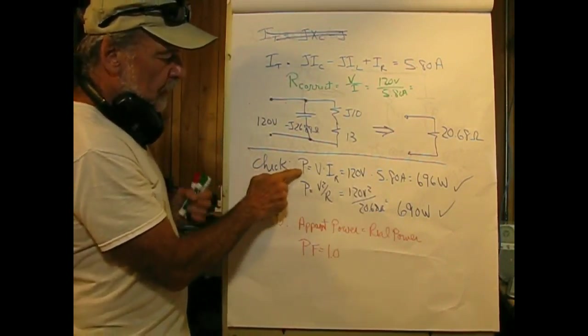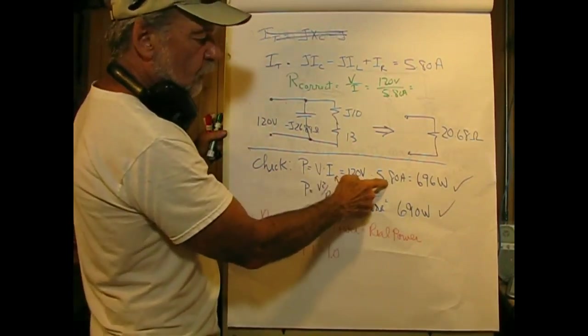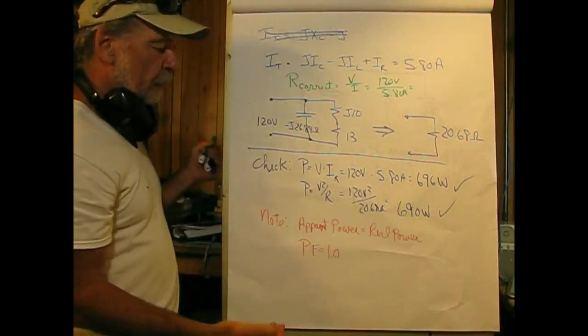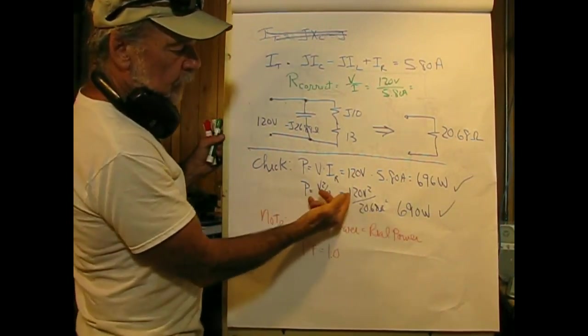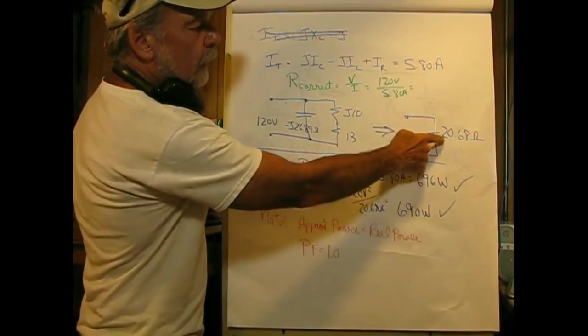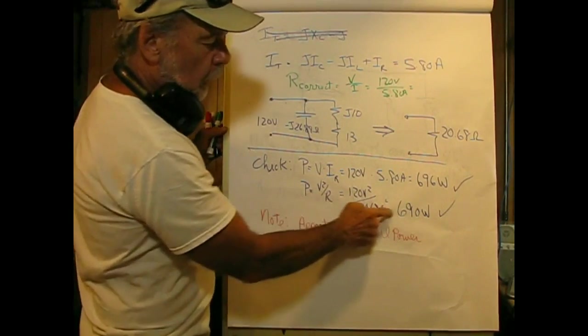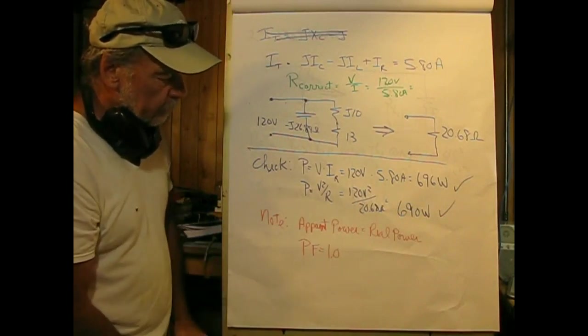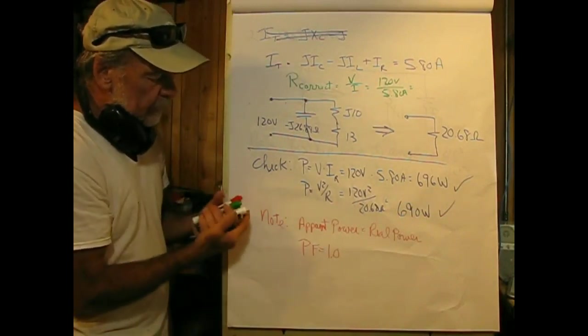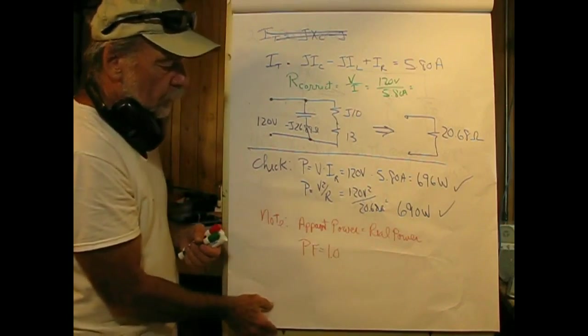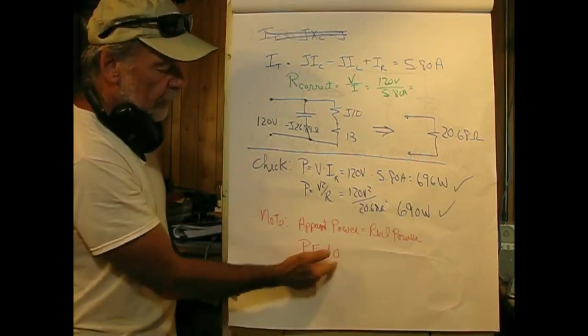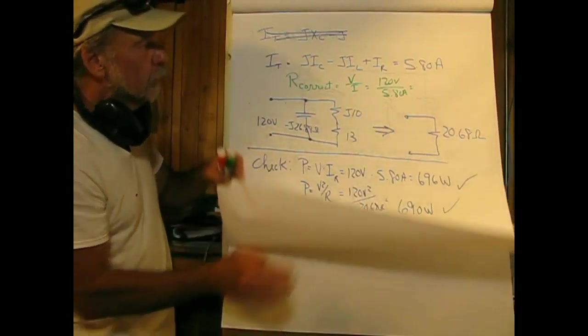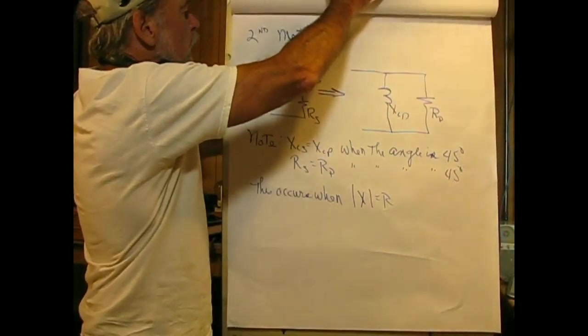If we check this, P equals V times IR, 120 times 5.8 amperes gives us 696 watts. I'm happy with that. P equals V squared over R equals 120 volts squared divided by our corrected resistance, also gives us 696 watts. Got a little roundoff there, but I'm happy with that. Under corrected conditions, the apparent power is equal to the real power and the power factor is equal to 1.0.